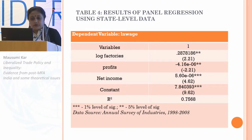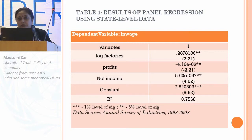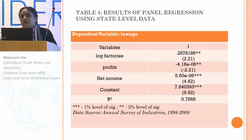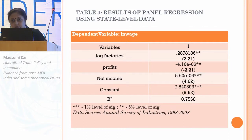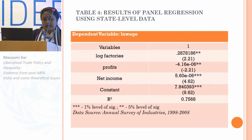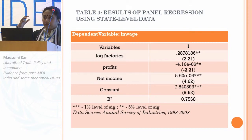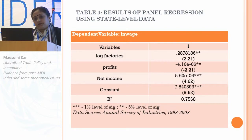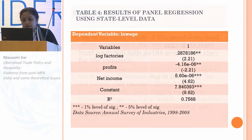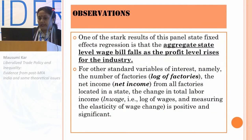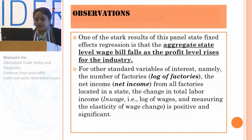There is a negative relation between aggregate wage bill and profit level. This may happen because higher profit-making firms are expected to employ more capital than labor. This is possible either with greater capitalization replacing labor or with the retrenchment of labor from organized units. Movement of labor into less organized units actually decreases labor cost. The relation with other variables like number of factories and income shows that the change in total labor cost is positive and significant.